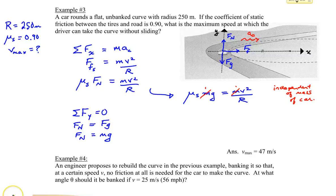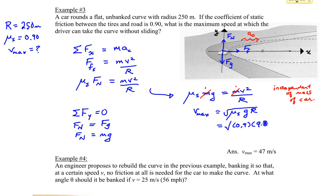So now let's rearrange for the velocity. The maximum velocity will be now equal to the square root of mu s times g times R. So now we can substitute in here the coefficient of static friction is 0.9, g is 9.8 meters per second squared and the radius of the circle is 250 meters.